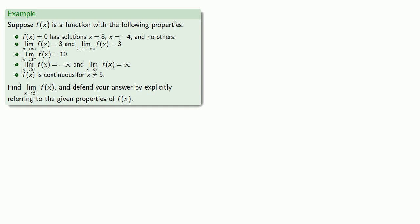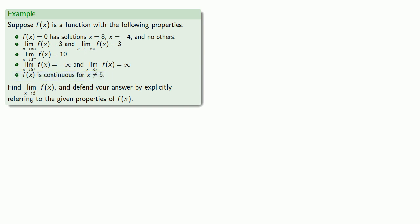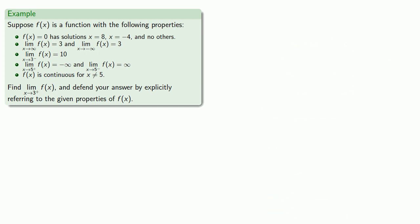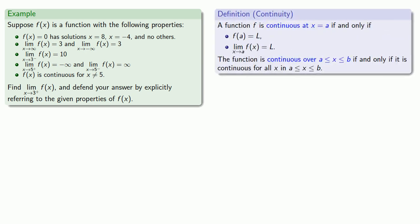Let's start out by finding the limit as x approaches 3 from above of f of x, and importantly we'll defend our answer by explicitly referring to the given properties of f of x. The most general piece of information is the fact that f of x is continuous for x not equal to 5, so we might expect this to be the most useful. Since definitions are the whole of mathematics, we know the definition of continuity — the key concept being that the limit is equal to the function value.